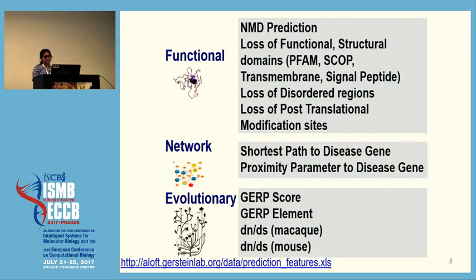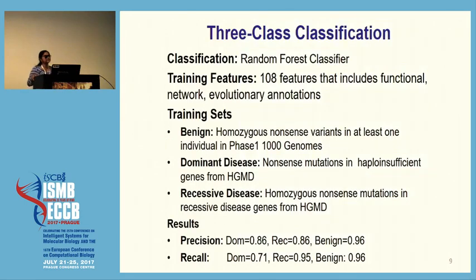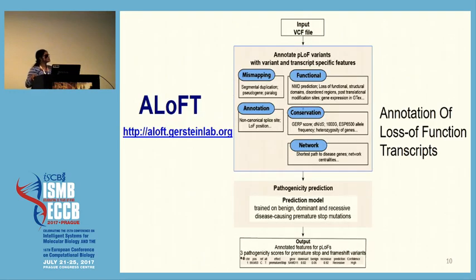In total, we used 108 features and a random forest classifier, doing a three-class classification to discriminate between benign variants, variants that would lead to dominant disease (heterozygous loss of function), and variants that lead to disease only when recessive. This was done with tenfold cross-validation and the results are pretty good for a three-class classifier. The entire software is available at aloft.kirstenlab.org.